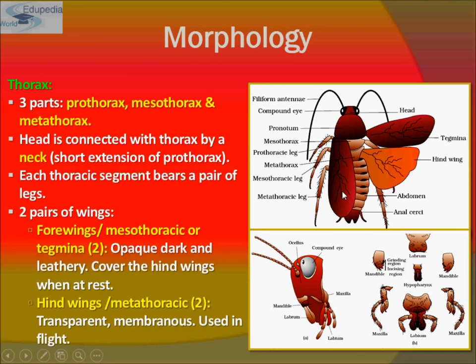When at rest, the tegmina cover the hind wings. The hind wings — also called metathoracic wings — are transparent, membranous, and used in flight. There are two of them, and they are the true functional wings.